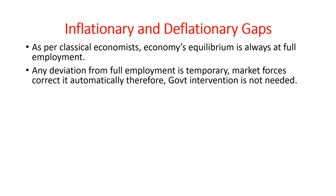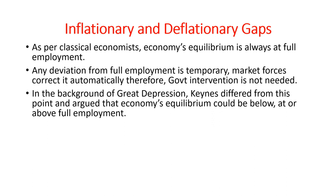This deviation is for a very short time period only. Market forces come into action and correct it automatically, and because of this, government intervention in the economy is not needed. However, in the background of the Great Depression, Keynes differed from this point and argued that an economy's equilibrium — the equation of aggregate demand and aggregate supply — could be at full employment, below full employment, or even above full employment level of output.